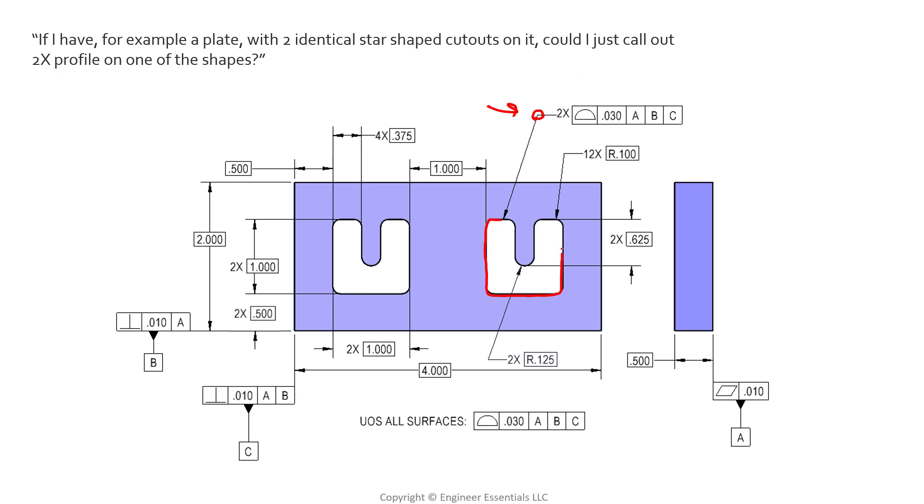So all of these surfaces, this pattern of surfaces, is going to be analyzed because we know we have an all-around modifier. So this pattern of surfaces—and oh by the way there's two of them—so these two patterns of surfaces are being held with profile of a surface to a total tolerance value of 0.030 with respect to datum feature A as a primary datum, datum feature B as a secondary datum, and datum feature C as your tertiary datum. So what does this mean? Let's analyze both of these patterns of surfaces.